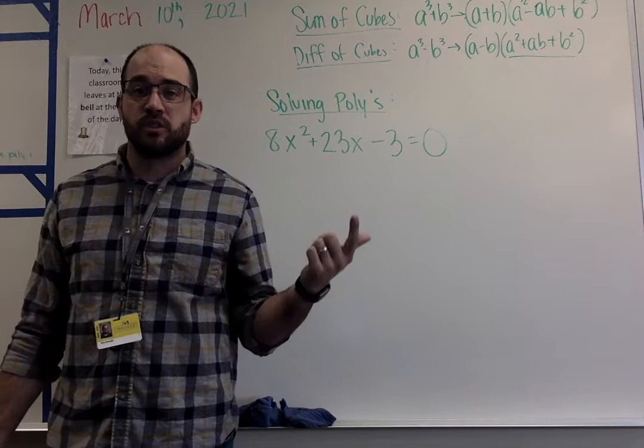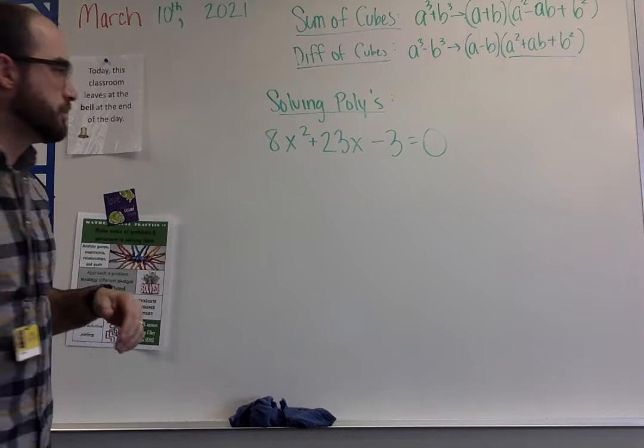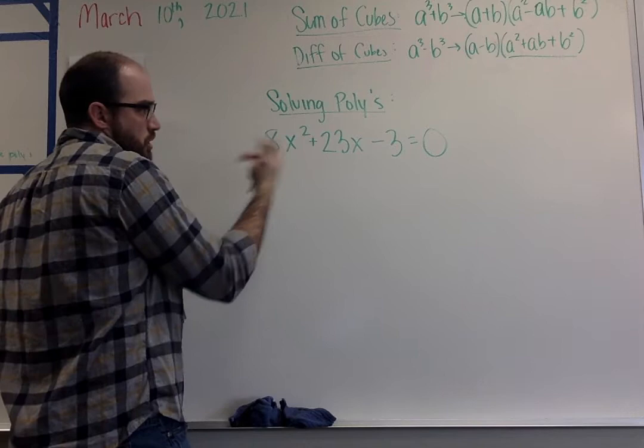For solving polynomials, there's a couple different ways we deal with these. There's usually about four different polynomials: trinomials, difference of squares, sum and difference of cubes, and four term polynomials. I'll be showing you three of them because the four term polynomial is the exact same as our trinomials after the first step.